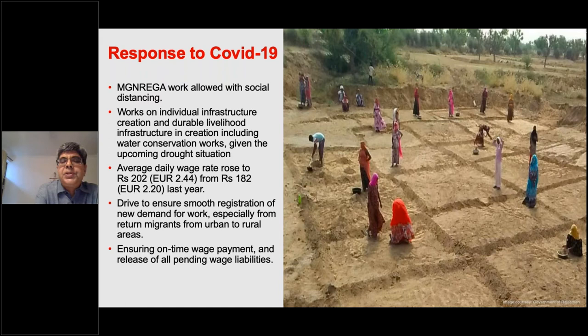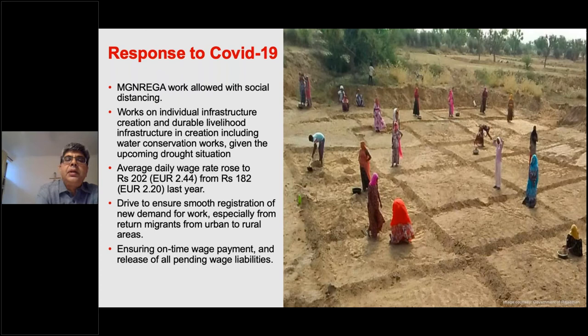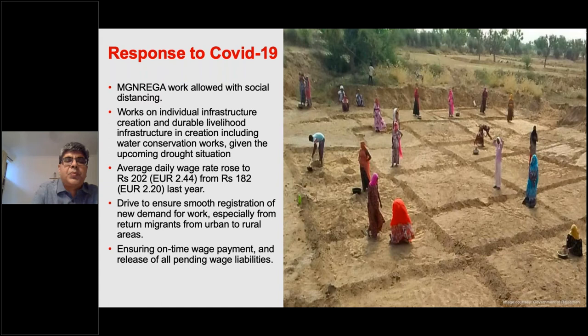MGNREGA was not stopped after an initial lull — it was restarted with social distancing norms introduced. The focus is now on infrastructure creation and durable livelihood infrastructure, with emphasis on water conservation and water management during this summer period, which is critical for irrigation. Wages were also increased just before COVID, which has helped. Exemptions have been made so that people can easily ask for work without going through the traditionally long enrollment process.